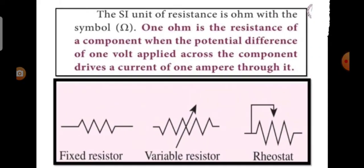The SI unit of resistance is Ohm with a symbol omega. 1 Ohm is the resistance of a component when the potential difference of 1 volt applied across the component drives the current of 1 ampere through it. Fixed resistors have fixed value of resistance while variable resistors like rheostats can be used to obtain desired values of resistance.